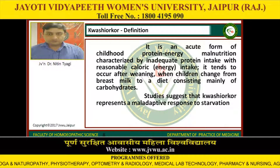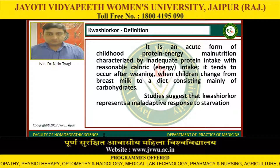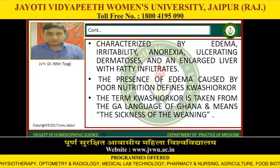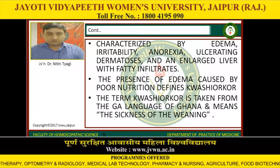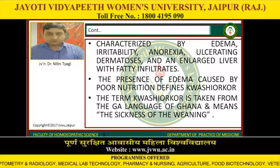Kwashiorkor is the acute form of childhood protein energy malnutrition characterized by inadequate protein intake with reasonable calorie intake. It tends to occur after weaning when children change from breast milk to a diet consisting mainly of carbohydrates. Studies suggest that kwashiorkor represents a malnutritive response to starvation. It is characterized by edema, irritability, anorexia, ulcerating dermatosis and an enlarged liver with fatty infiltrates. The presence of edema caused by poor nutrition defines kwashiorkor. The term kwashiorkor is taken from the Gar language of Ghana and means 'sickness of the weaning.'